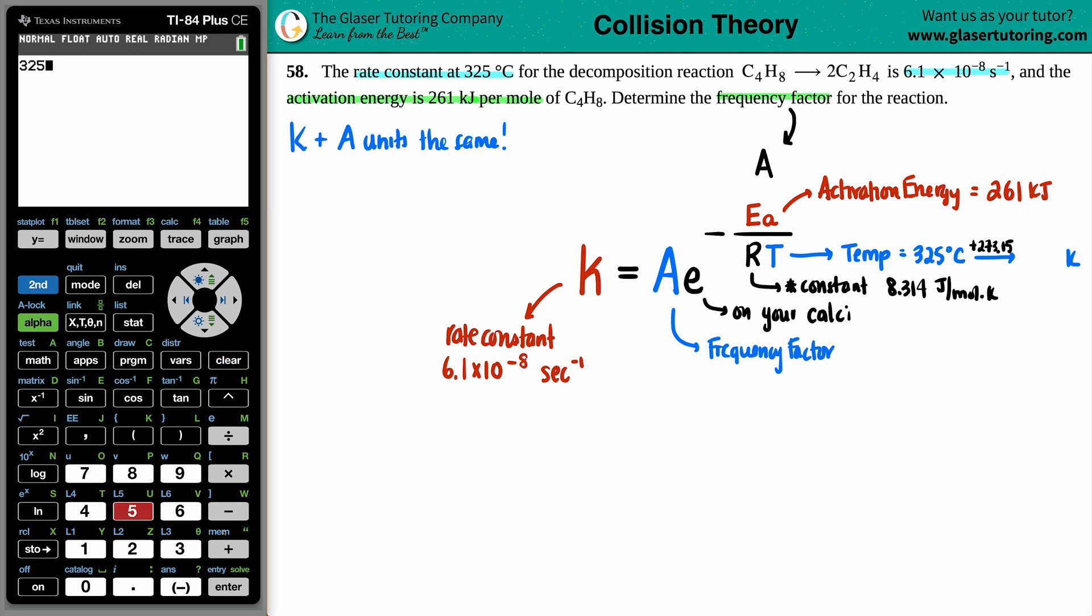So maybe that's what I'll do. 325, right? 325. Yeah. 325 plus 273.15. Looks good to me. So we get 598.15.